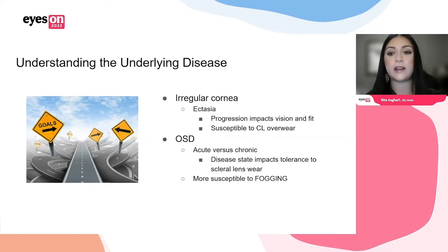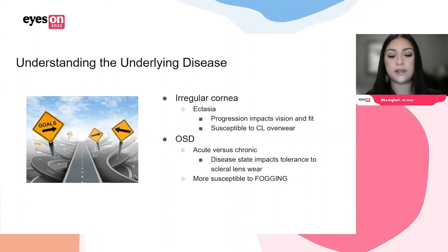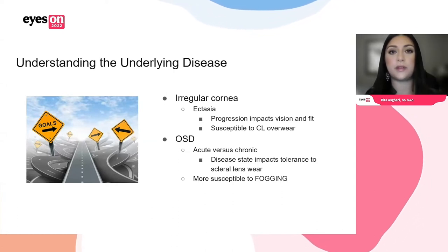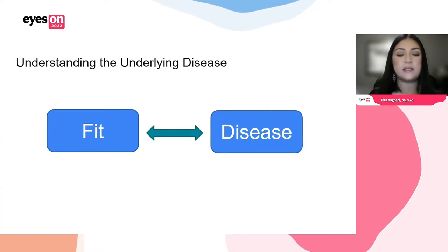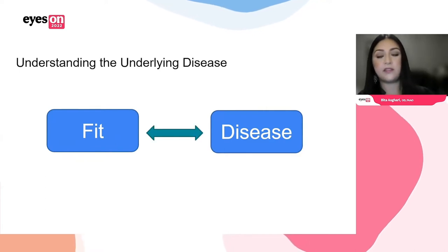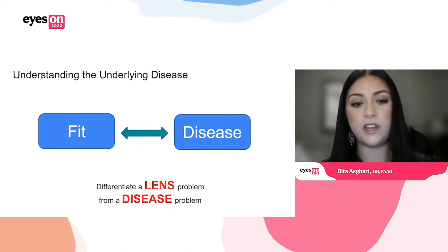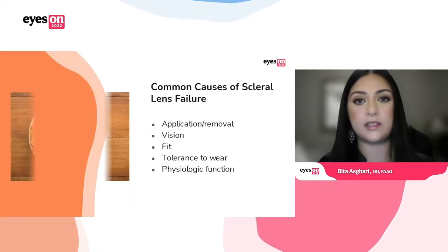Understanding that ocular surface disease patients are more susceptible to fogging is very important so that you're laying down an appropriate foundation as they go through the fitting process. Why is understanding the disease so important? Because the fit can impact the disease and the disease can impact the fit. You have to learn to differentiate what a lens problem or fit issue is from what a disease problem is.